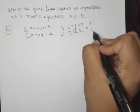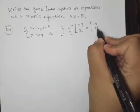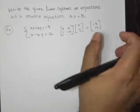And then lastly, I have the negative 8 and the 12, and this is what I call the solution matrix.